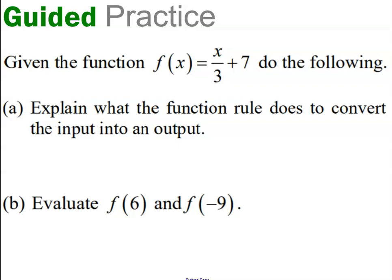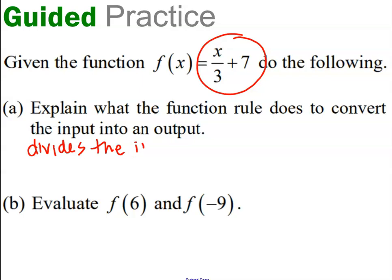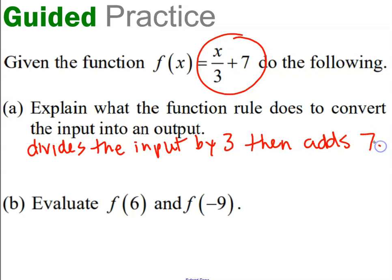Let's take a look at a new problem. Given the function f of x equals x over 3 plus 7, do the following. Part a: explain what the function rule does to convert the input into an output. This is what the function does — it divides the input by 3, then it adds 7. That's what the rule does. Any input you give me, we're going to divide it by 3 and add 7.